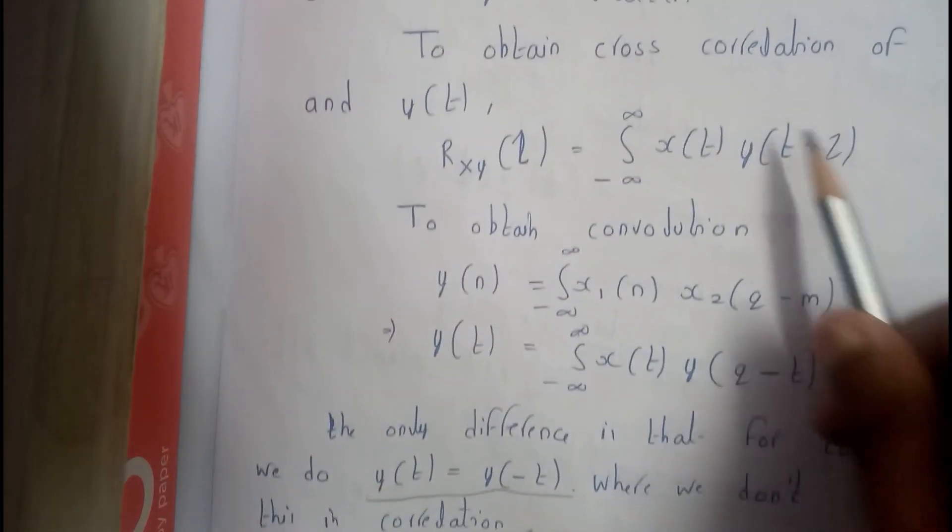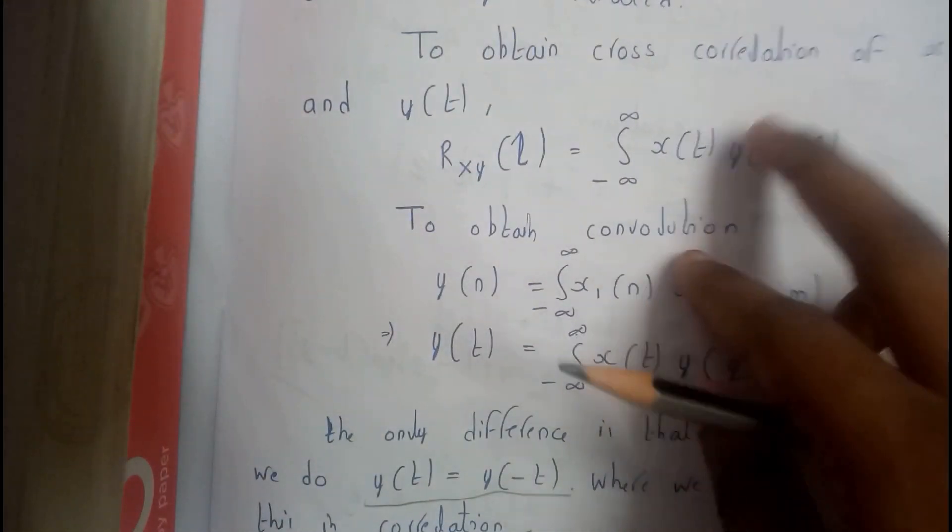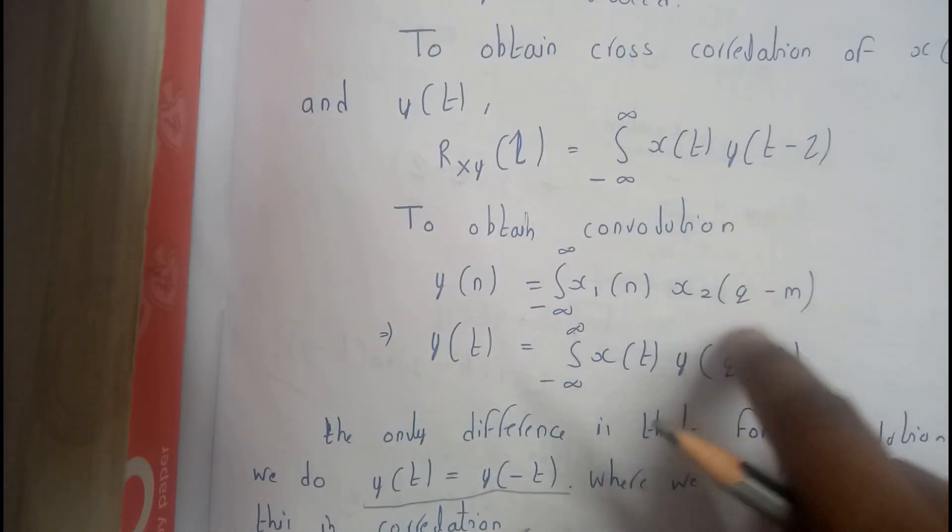So you just write the formula of convolution, you write the formula of correlation and show them. Here also you can just identify.